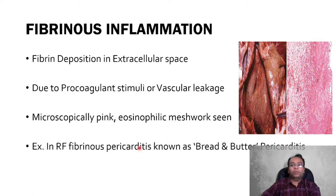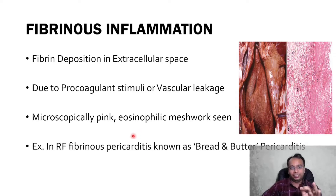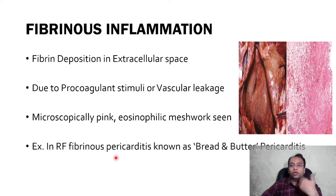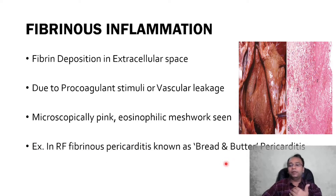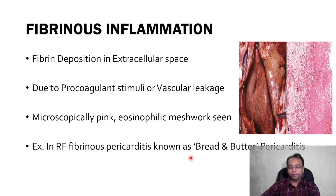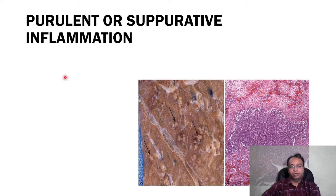The most common example is rheumatic fever and rheumatic heart disease, in which the outer layer of the pericardium is inflamed — known as pericarditis, or fibrinous pericarditis. It is also known by the name bread-and-butter pericarditis.